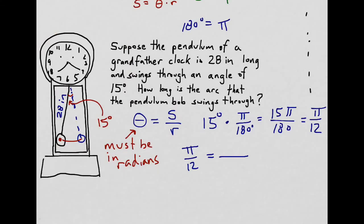So the unknown thing, we don't know the arc, we don't know the s value. But we do know that the radius should be 28.